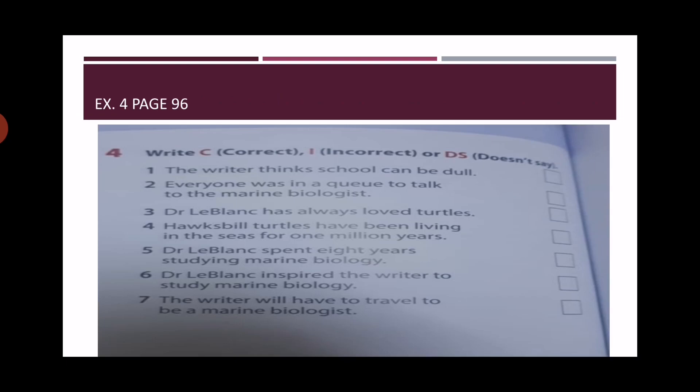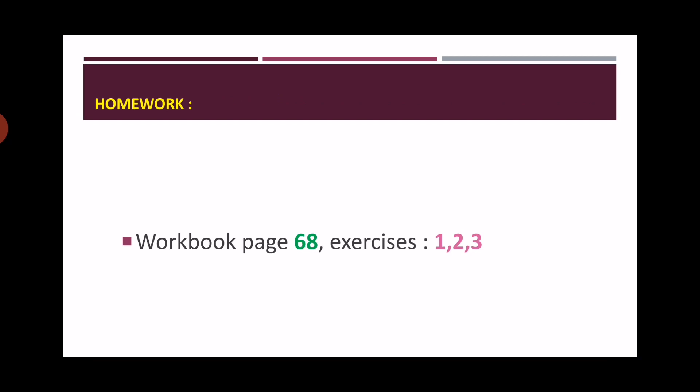Now we have exercise number four, which is on the same page, page 96. You have to write C for correct, I for incorrect, or DC for doesn't say. Number one: the writer thinks school can be dull. Two: everyone was in a queue to talk to the marine biologist. Three: Dr. LeBlanc has always loved turtles. Four: hawksbill turtles have been living in the seas for one million years. Five: Dr. LeBlanc spent eight years studying marine biology. Six: Dr. LeBlanc inspired the writer to study marine biology. Seven: the writer will have to travel to be a marine biologist.